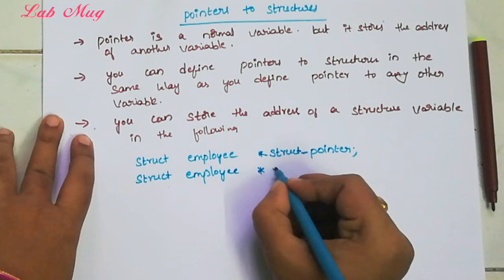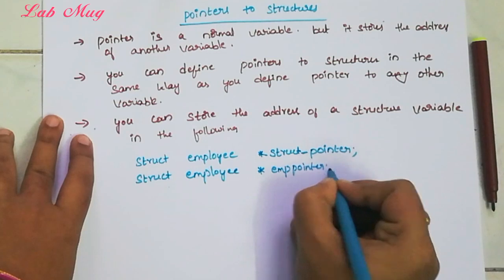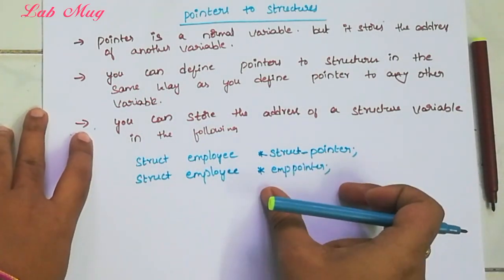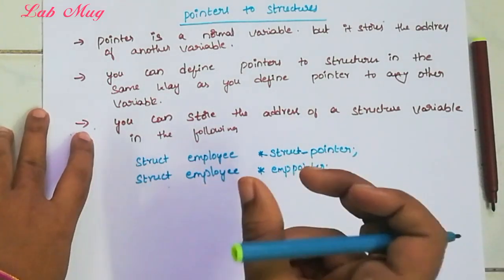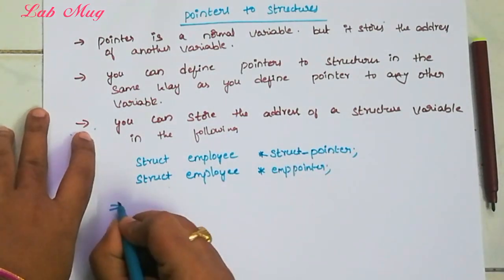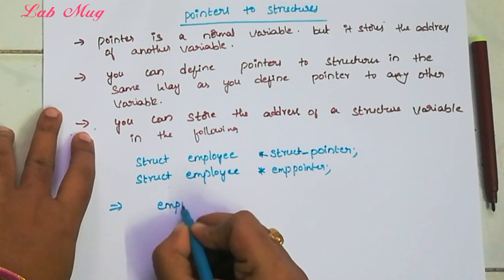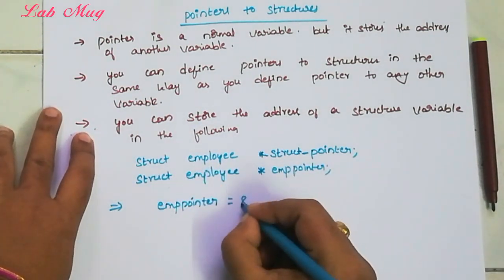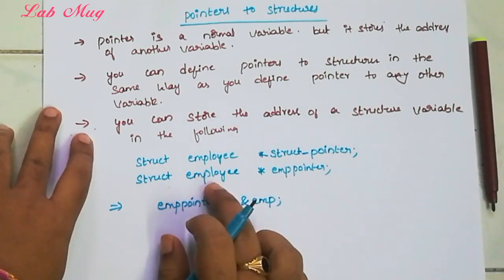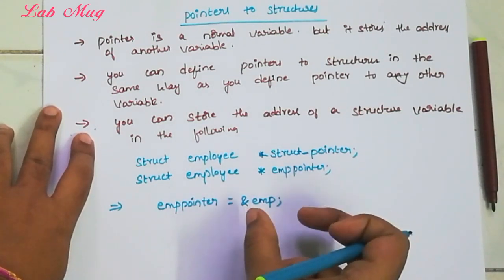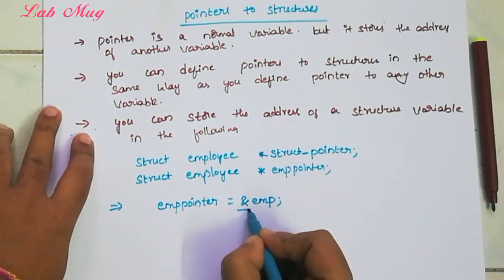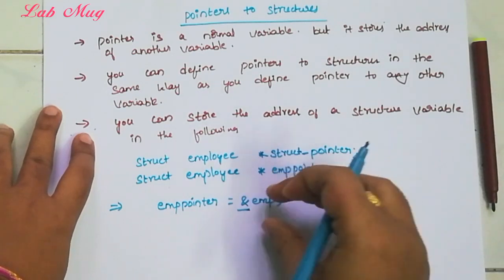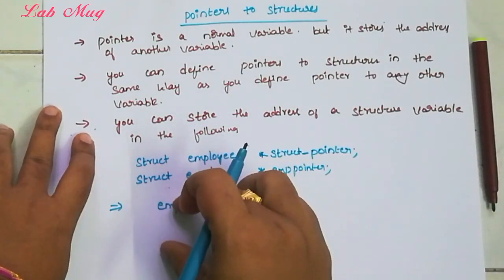So we use asterisk emp_pointer. Next, we need to use this pointer. emp_pointer is a pointer variable, and we need to store the address of the employee structure. That is ampersand emp. So emp is the structure name, the variable from the previous example. Through ampersand emp, we store the address in the emp_pointer variable.